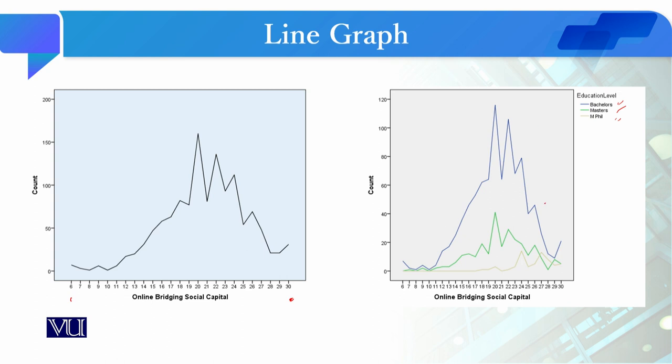This purple line is for bachelors, and their score at every point is quite high, as compared to Masters and MPhil students.